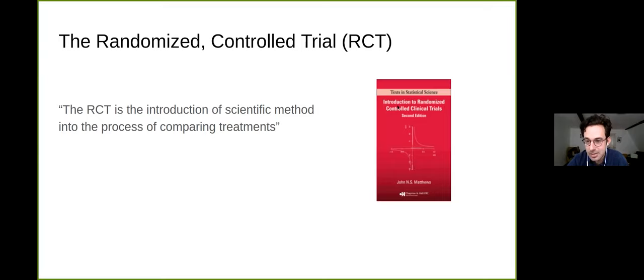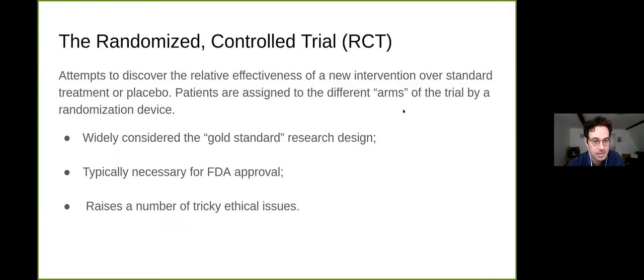If you look at the first few pages of these kinds of textbooks, like Introduction to Randomized Controlled Clinical Trials, you'll see some very impressive statements being made, like the RCT is the introduction of scientific method into the process of comparing treatments. So it's kind of equating randomized controlled trials with scientific method in medicine, a pretty strong claim. An RCT is the attempt to discover the relative effectiveness of some new intervention with respect to some standard treatment or placebo. Patients are assigned to different arms of the trial by use of a randomization device. It's widely considered the gold standard research design, typically necessary for FDA approval, and it raises a number of tricky ethical issues.